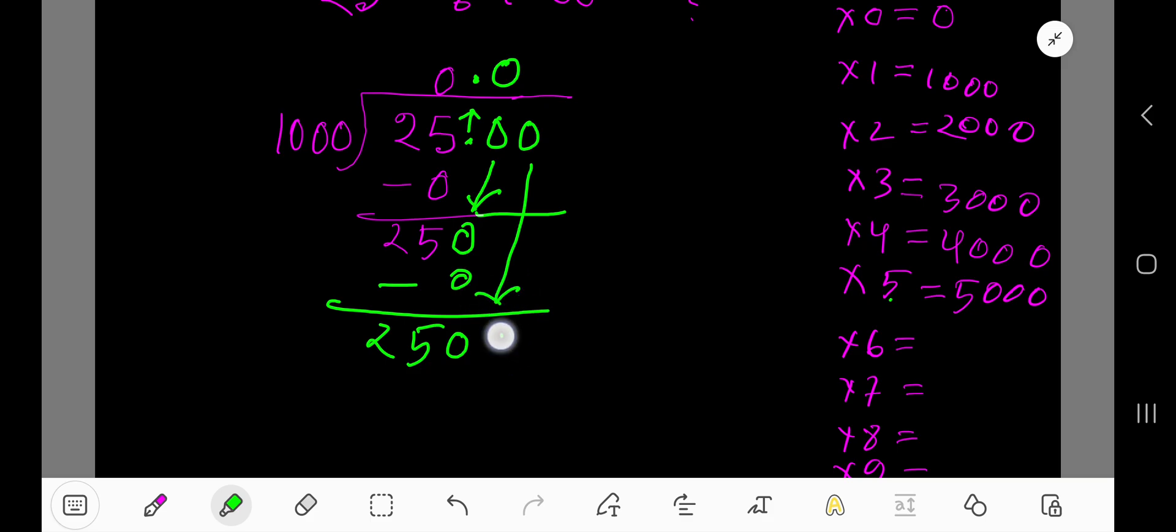Bring down this 0 to get 2500. 1000 goes into 2500 how many times? Look, 2 times means 2000, 3 times means 3000. So we have to stop here.